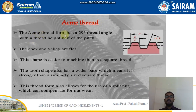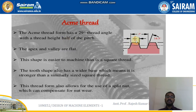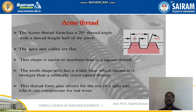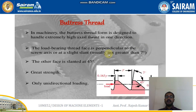Moving to the second type — the ACME thread. The ACME thread form has a 29-degree thread angle, so the half thread angle is 14.5 degrees. The pitch, as defined, is from one point to the next adjacent point. Half of the pitch is the height of the thread. The apex and the valley are flat. This shape is easier to measure than a square thread. The tooth shape also has a wider base, which means it is stronger than a similarly sized square thread. This thread form also allows for the use of a split nut, which can compensate for nut wear.